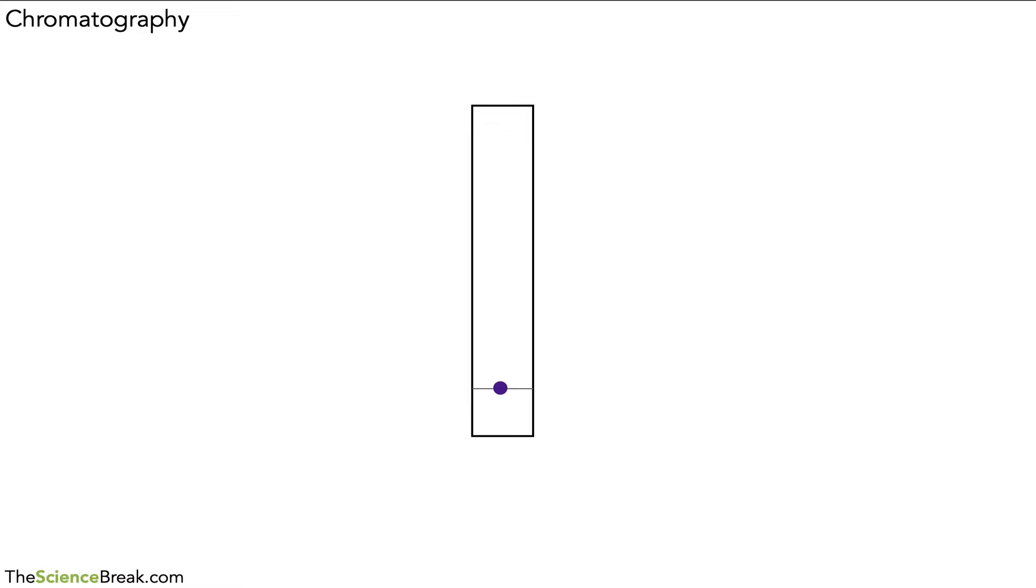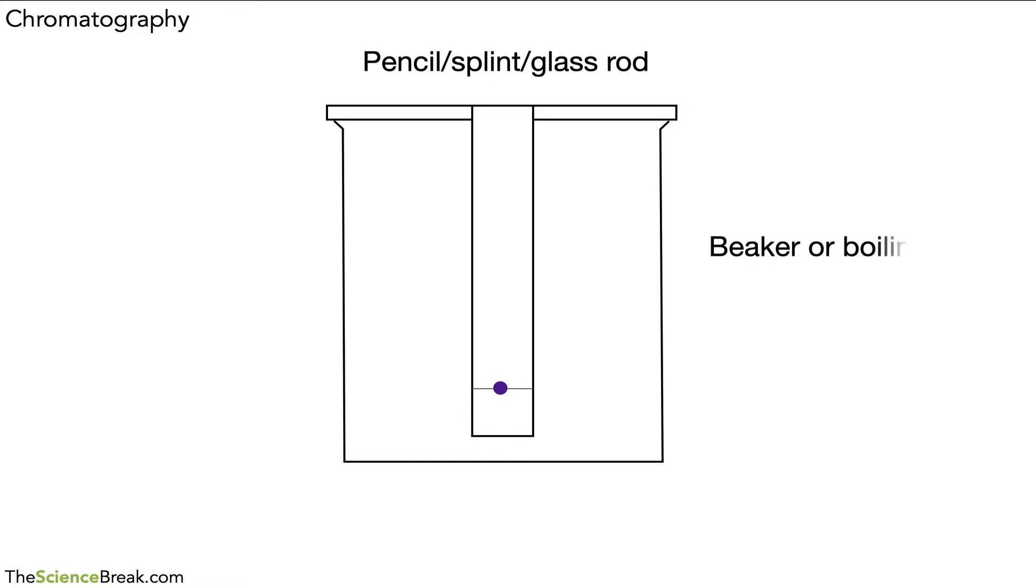We have our paper set up ready to go with our ink spot on the pencil line at the bottom. We then place the whole thing and support it on some kind of support—this is usually a pencil or a splint, which is a wooden stick we use to light Bunsen burners, or a glass rod. Once we've done that, we can place that into a beaker or a boiling tube. A boiling tube is a bit like a test tube but it's just a bit wider and often a bit taller.